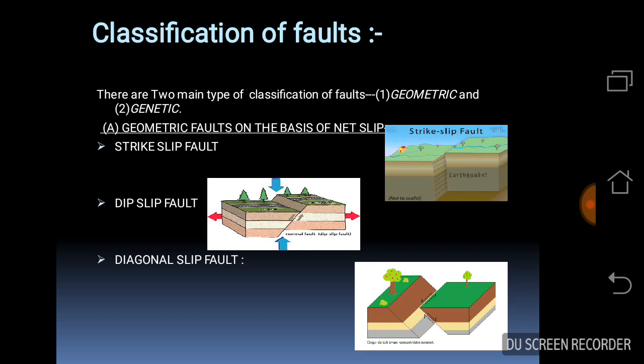Dip-slip fault—it is clearly from the diagram—is a fault in which movement is essentially down or along the dip of the fault. Diagonal fault is a fault in which the direction of movement is diagonal to both the dip and strike of the fault, also called oblique fault or diagonal-slip fault.